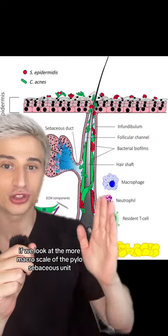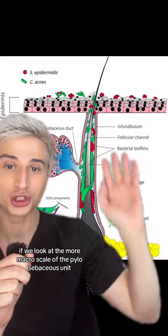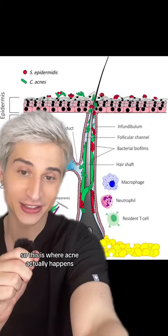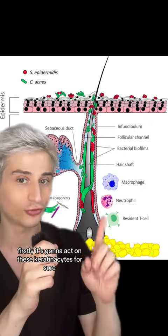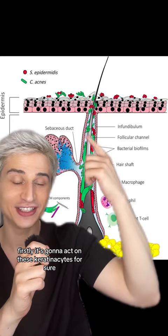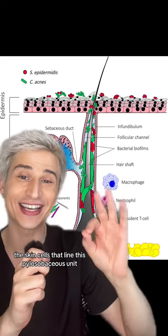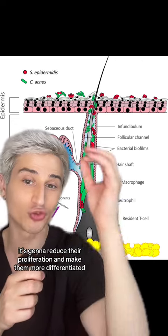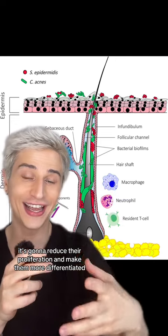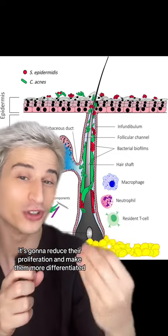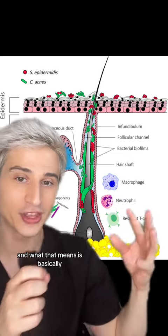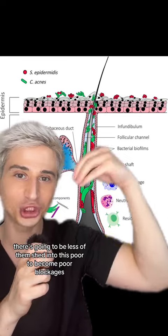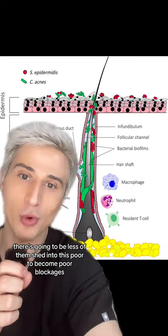At the more macro scale of the pilosebaceous unit — which is where acne actually happens — firstly, retinoids act on the keratinocytes, the skin cells that line this pilosebaceous unit. They reduce their proliferation and make them more differentiated, meaning there will be fewer of them shed into the pore to become pore blockages.